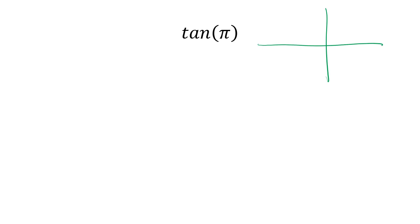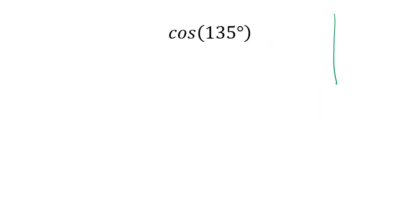Tangent of π. π is over here and the coordinates at this point are (-1, 0). Tangent is y divided by x, so that's 0 divided by -1, which is 0. The tangent of π is just 0.